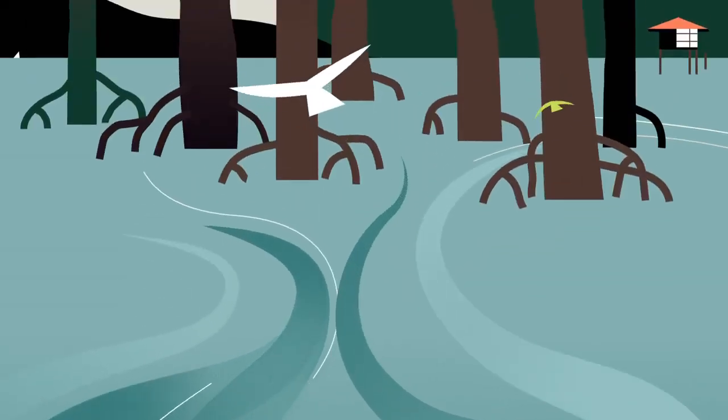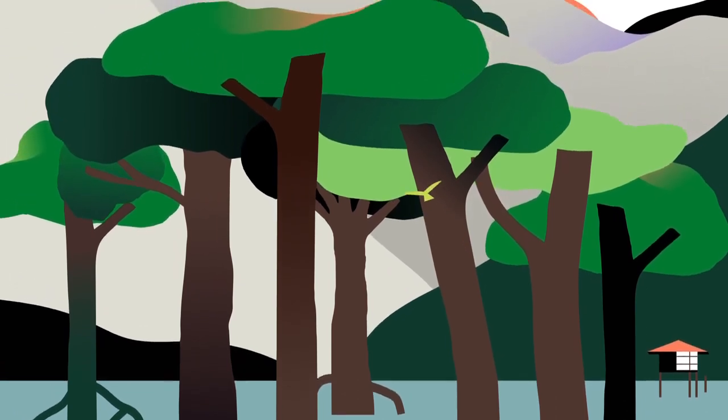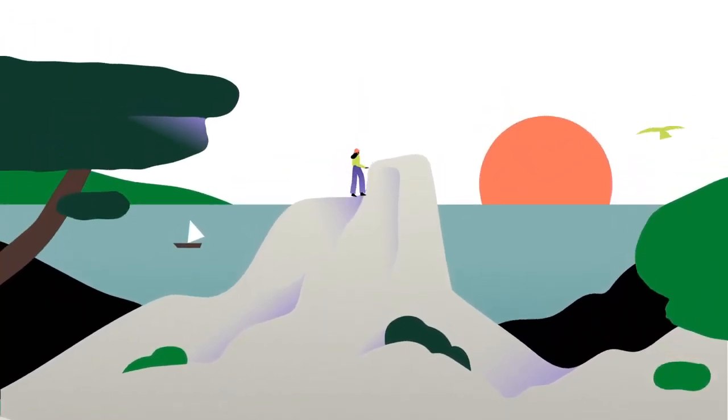Because when mangroves, marshes, and seagrass join forces with clean energy, forests, and other habitats, that's how we turn the tide on climate change.